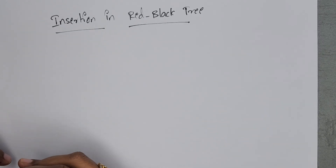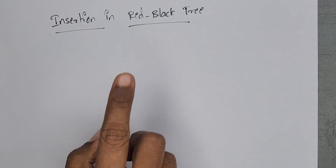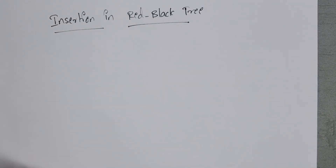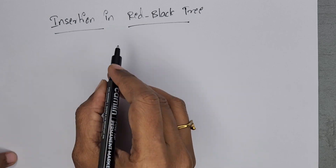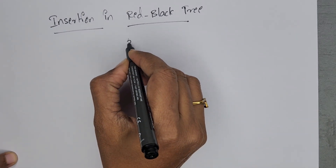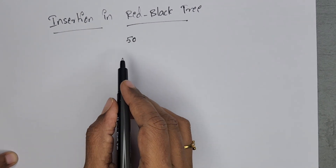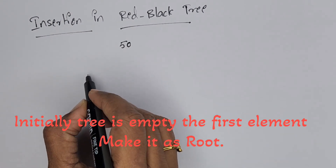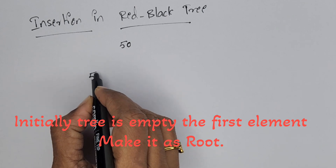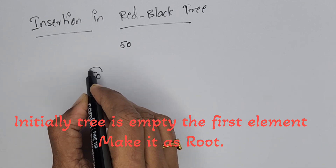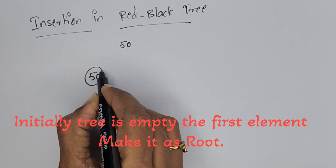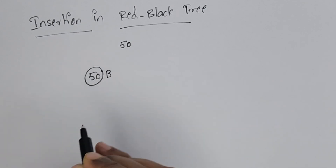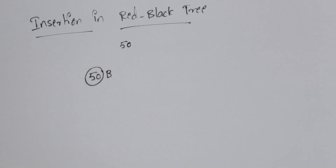We will see how to insert elements into a red-black tree. The first element is 50. Initially the root is empty, so make it as root. Always the root is colored black.